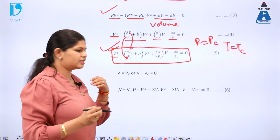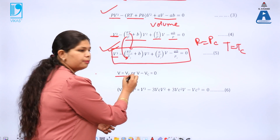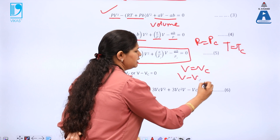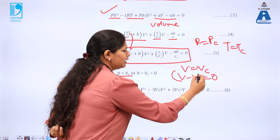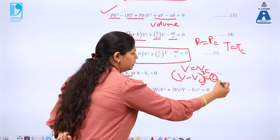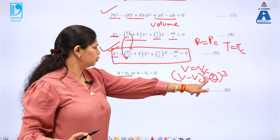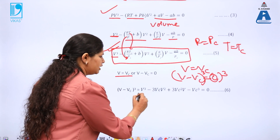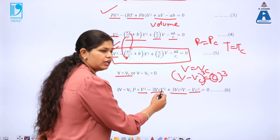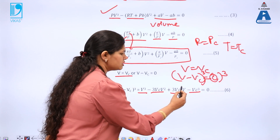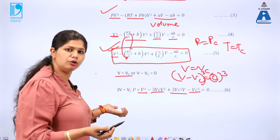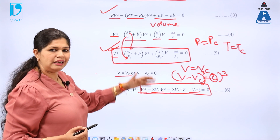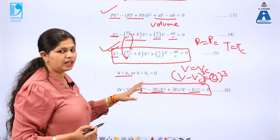At the critical point, volume becomes Vc, so we can write (V − Vc)³ = 0. Expanding using the cubic formula (a − b)³, we obtain V³ − 3VcV² + 3Vc²V − Vc³ = 0. This gives us a second cubic equation, and we now relate the coefficients of these two cubic equations to each other.